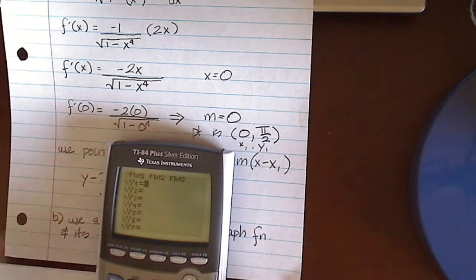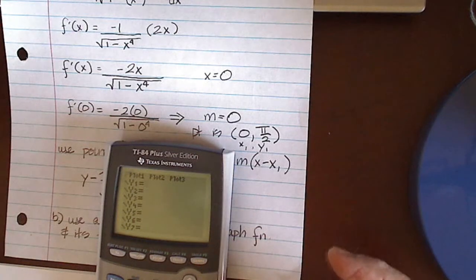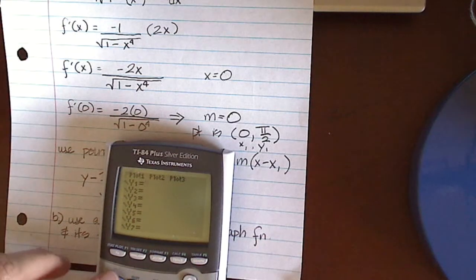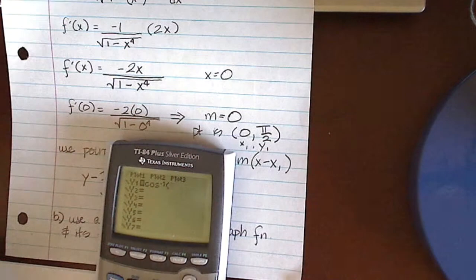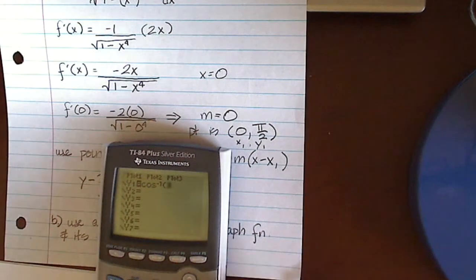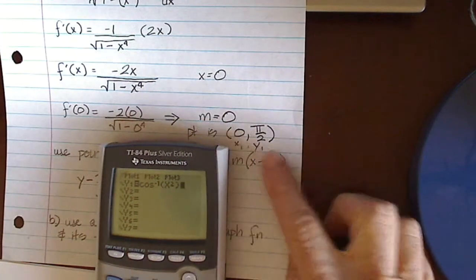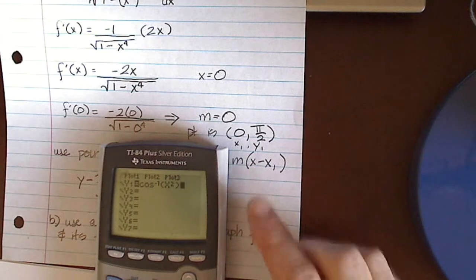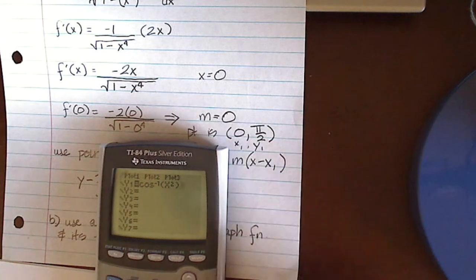So I'm going to y equals, and the first thing I'm going to put in is arc cosine of x squared. Well, on this calculator, I have to use inverse cosine, which is the same thing, of x squared, close paren, and I'm supposed to be between, I'm looking for the point 0 to pi, so let's go ahead and graph that, all right?